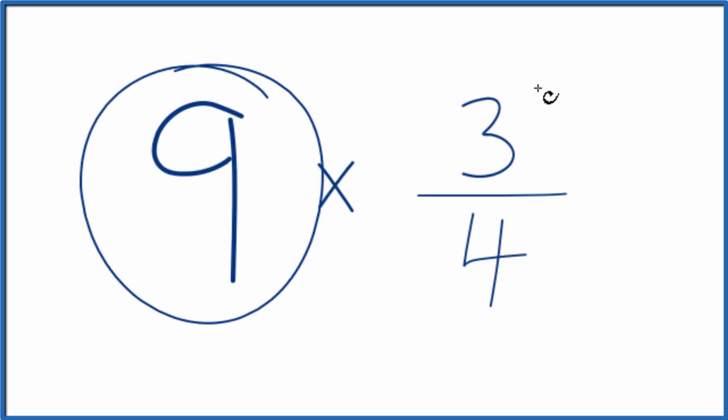Let's multiply 9 times 3 fourths. Here's how you do that. So you could just add 3 fourths together 9 times. That would give you the correct answer for 9 times 3 fourths.